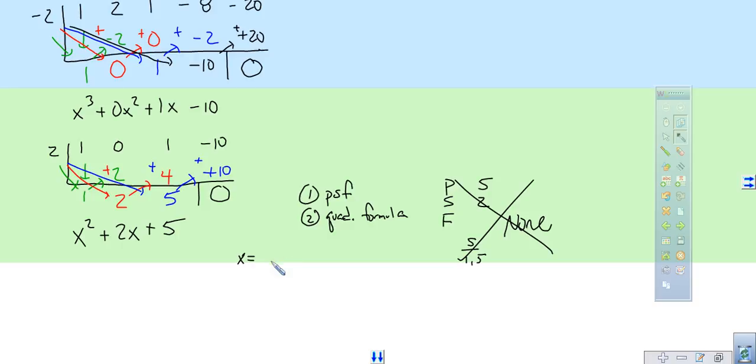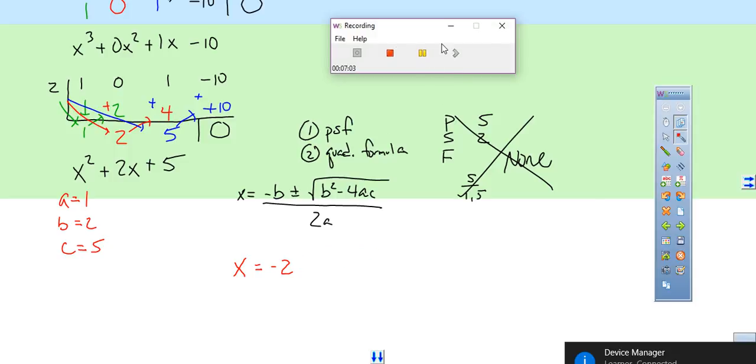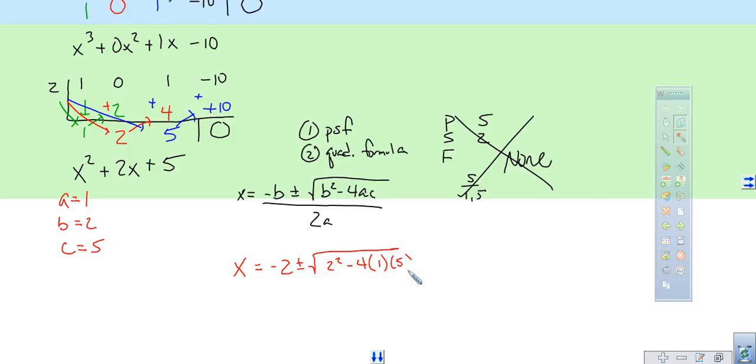So now I pull out my quadratic formula. Negative b plus or minus the square root of b squared minus 4ac all over 2a. Okay, so from our problem right here, we know that our a value is 1. We know our b value is 2. We know our c value is 5. So we plug that in. So x is equal to negative 2 plus or minus the square root of 2 squared minus 4 times a times c. All of that over 2a.